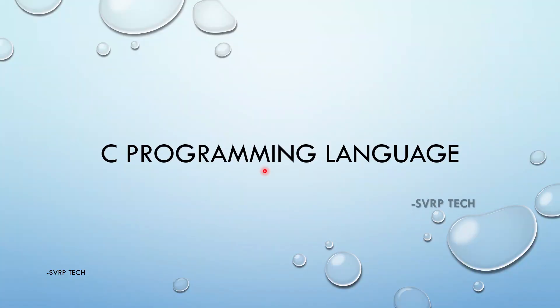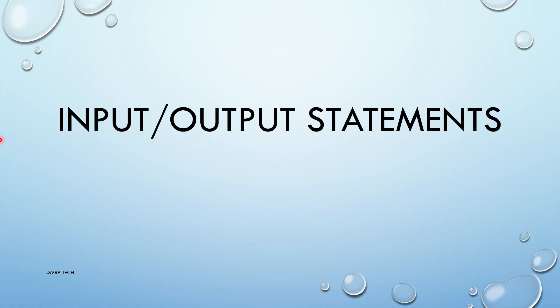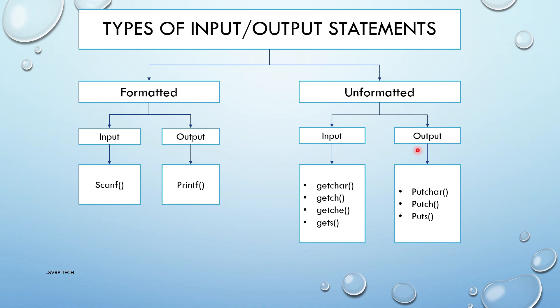Welcome to the session. Today we are going to learn about input and output statements. Input and output statements are used to read and write data in C programming. They are embedded in stdio.h. We have two types of input and output statements: formatted and unformatted.